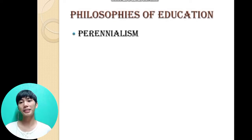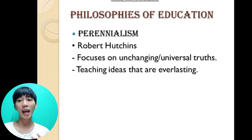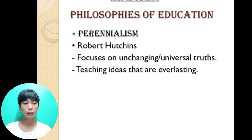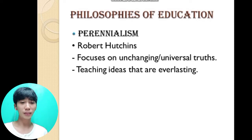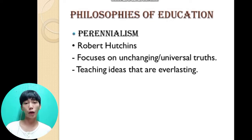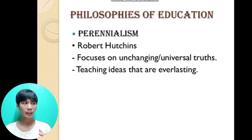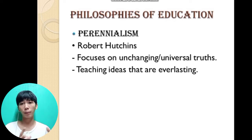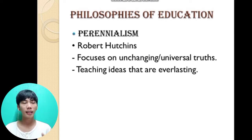Next is perennialism, given by Robert Hutchins. It focuses on unchanging universal truths, teaching ideas that are everlasting. This is also a teacher-centered philosophy that focuses on teaching the great works — reading great books such as philosophy and history. Teachers under this philosophy are generalist teachers, meaning they are not specialists focused on just one subject.